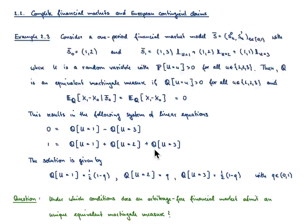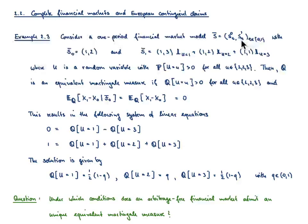This brings us to the question: can we specify conditions such that the equivalent martingale measure is unique for an arbitrage-free model? From this example, it is clear that when S1 may assume three different values we need three equations — meaning we should have not one but two risky securities to have a chance at a unique solution.